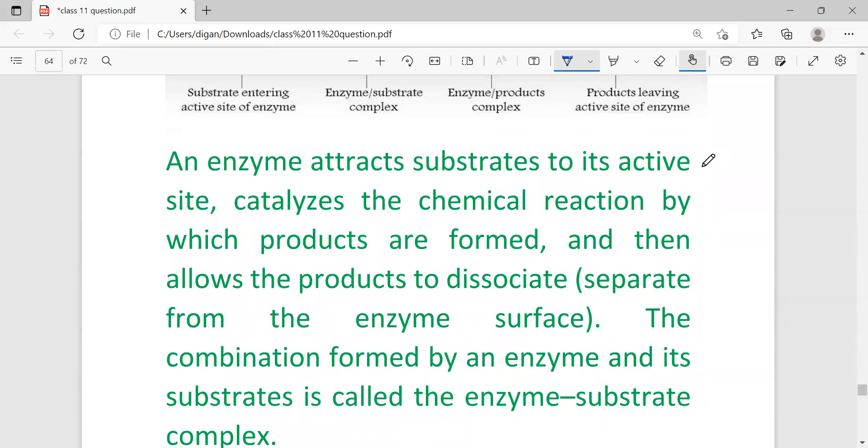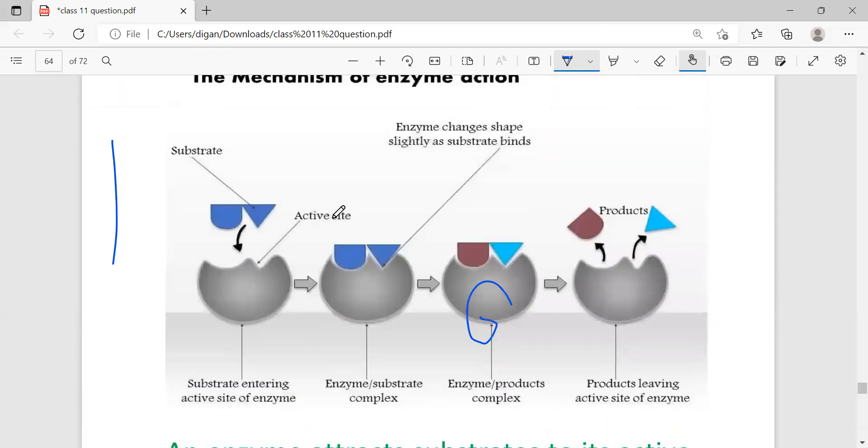An enzyme attracts the substrate to its active site, catalyzes the chemical reaction by which the products are formed, and then allows the product to dissociate or separate from the enzyme surface. This combination formed by an enzyme and its substrate is called the enzyme-substrate complex.